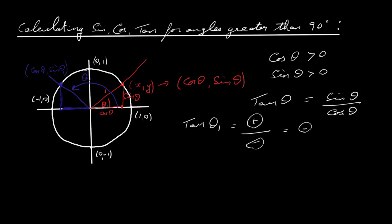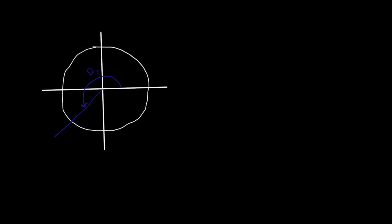We can do the same for the third and fourth quadrants. Let's redraw that. So again we draw our circle, our y-axis, our x-axis, and come down here in blue to the third quadrant. We're going to look at this angle here — we'll call it theta 3. Our coordinates along here will be cos theta 3, sine theta 3.